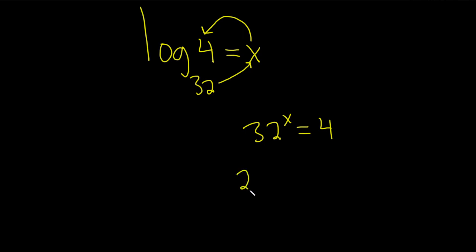So we can write 32 as 2 to the 5th. So we have 2 to the 5th to the x. And we can write 4 as 2 squared. So this is 2 squared.